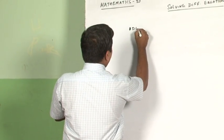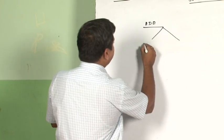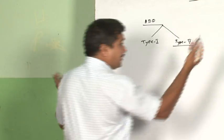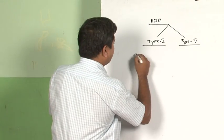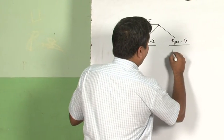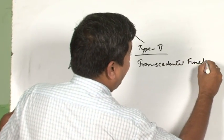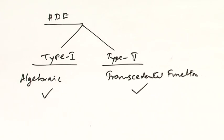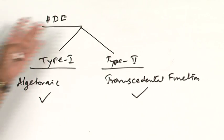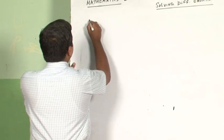When solving homogeneous differential equation problems, you come across two types. Please remember: Type 1 functions are algebraic in nature, and Type 2 are transcendental functions. I will take one example for each and explain what an algebraic versus transcendental function is, and how to go about solving them.